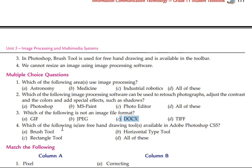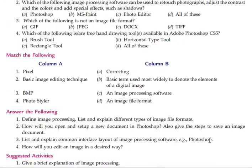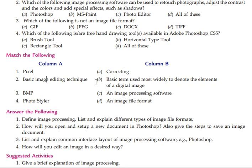Which of the following is a freehand drawing tool available in Adobe Photoshop CC? Brush tool, rectangle tool, horizontal type tool — all of the above. For matching items: Pixel is the basic term used most widely to denote the elements of a digital image — answer B. BMP is an image file format — answer D. Photo Styler relates to correcting.